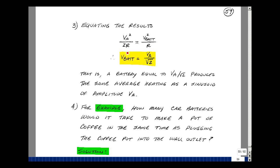Now, let's set this equal to the value we found on page 55 for the same value of resistance. We found that to be V_A squared over 2R. We can now solve for V_battery.